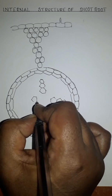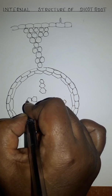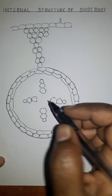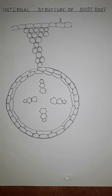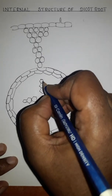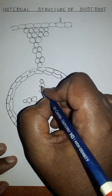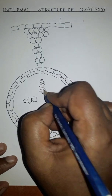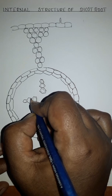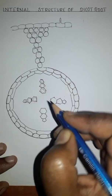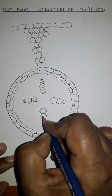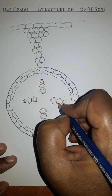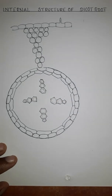In between the xylem you can see the pith region, which is also parenchymatous in nature. The xylem has a thick wall, so we make a double layer of xylem — this is metaxylem and this is protoxylem. The smaller one is protoxylem. In a dicot root they are less in number, whereas in monocot root they are more in number.